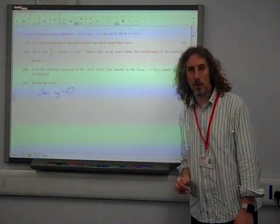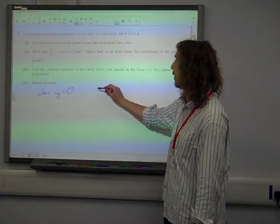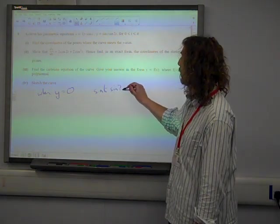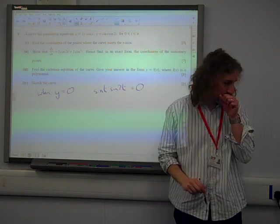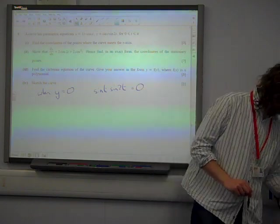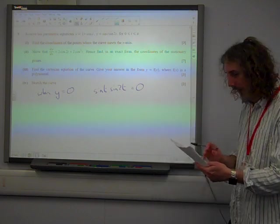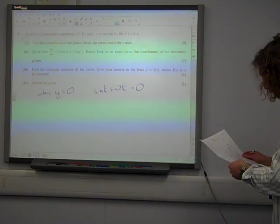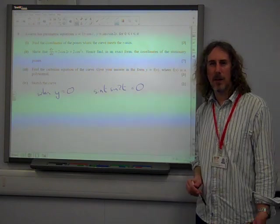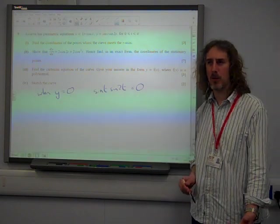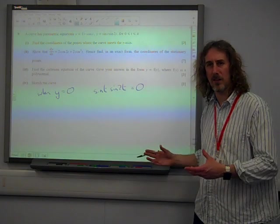So that means we're solving the equation where y is equal to 0, sine t, sine 2t, is equal to 0. And we want to solve this equation in the range that we've got, which is the range 0 to pi. Now be careful about this because we've got quite a few people just not pulling down all of the answers you could get.